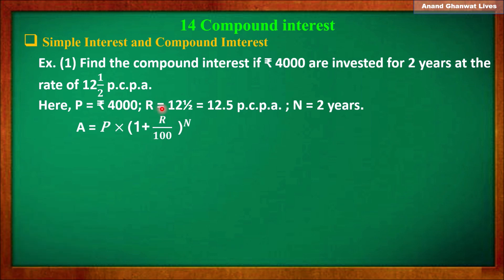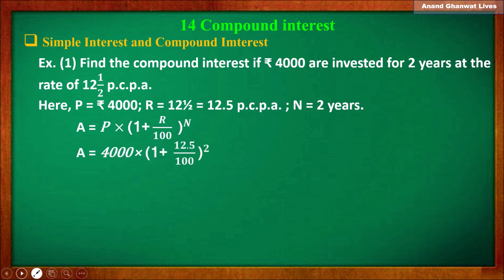The rate of interest is 12 and 1/2 percent pcpa, which means 12.5% pcpa, and the number of years n is equal to 2. So applying the compound interest formula A = P × (1 + r/100)^n, we put the values: p = 4000, r = 12.5, and n = 2.